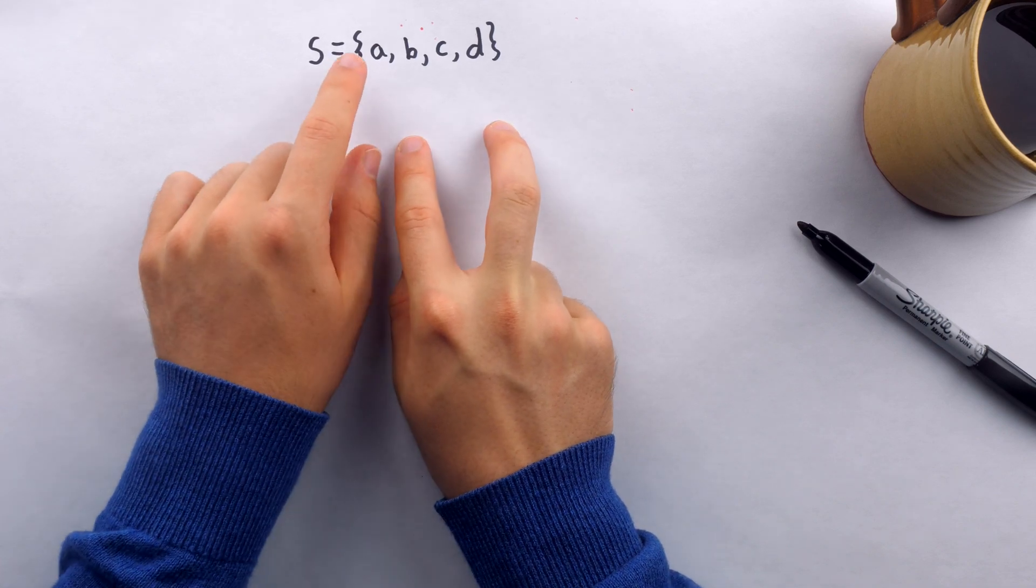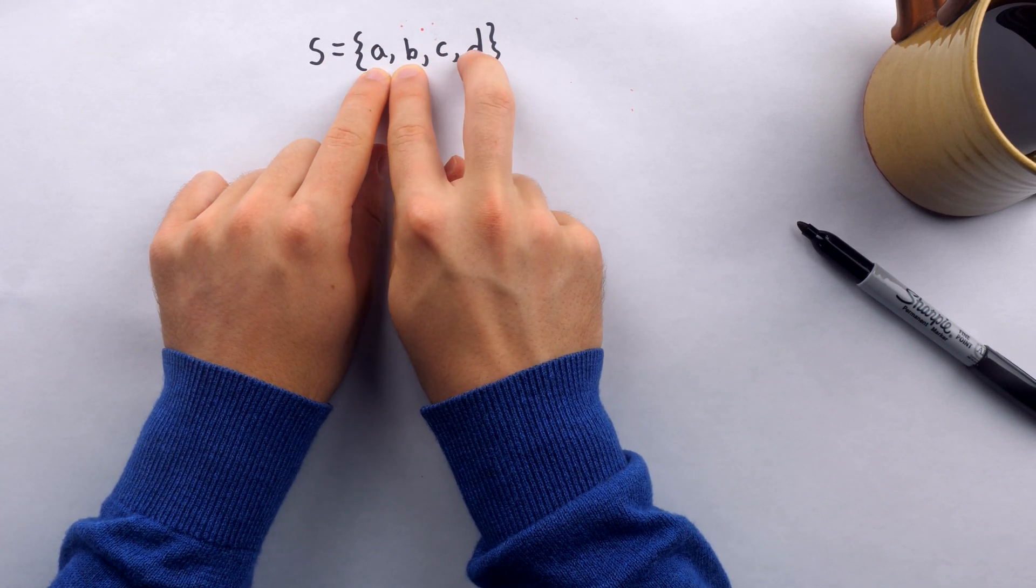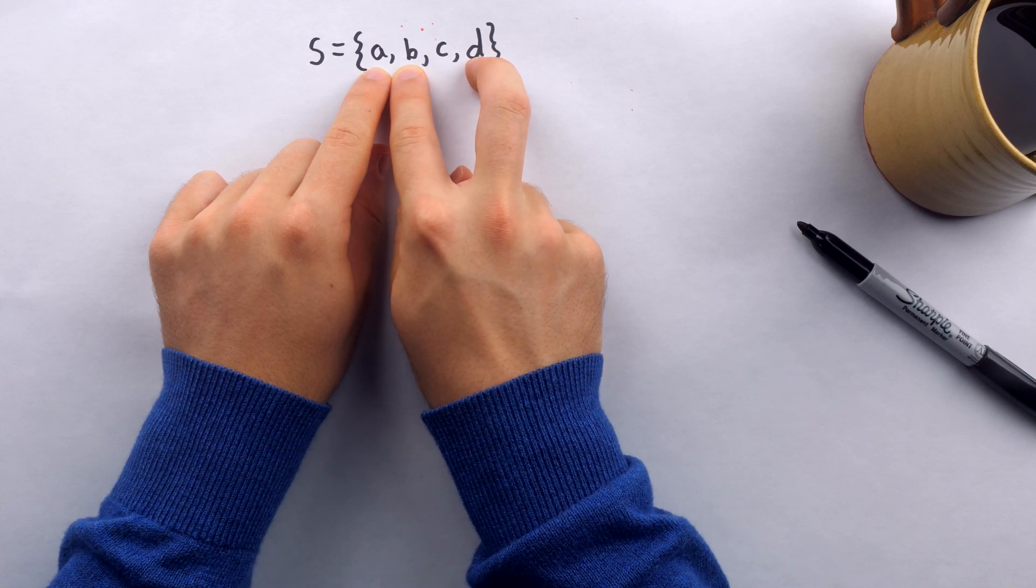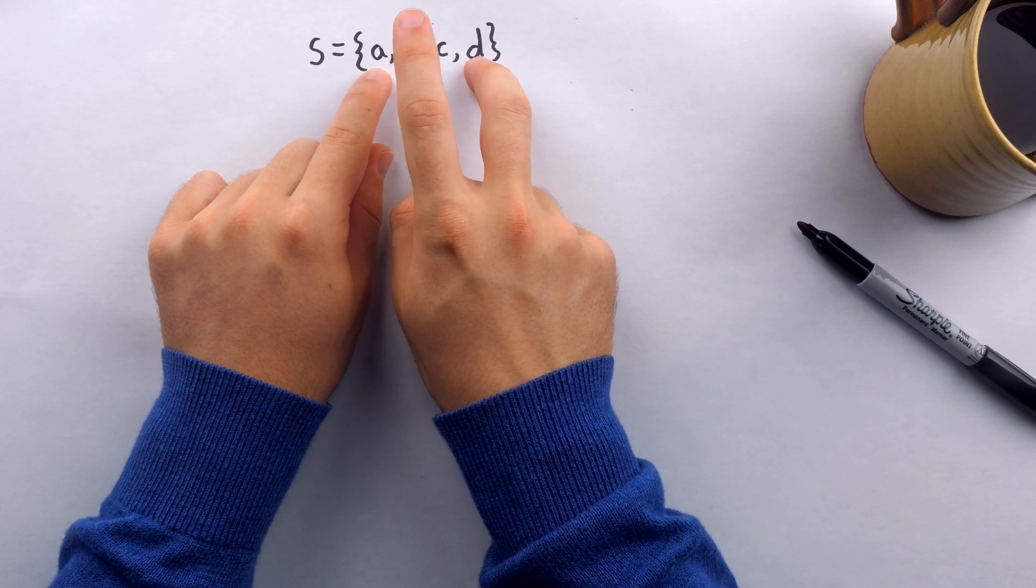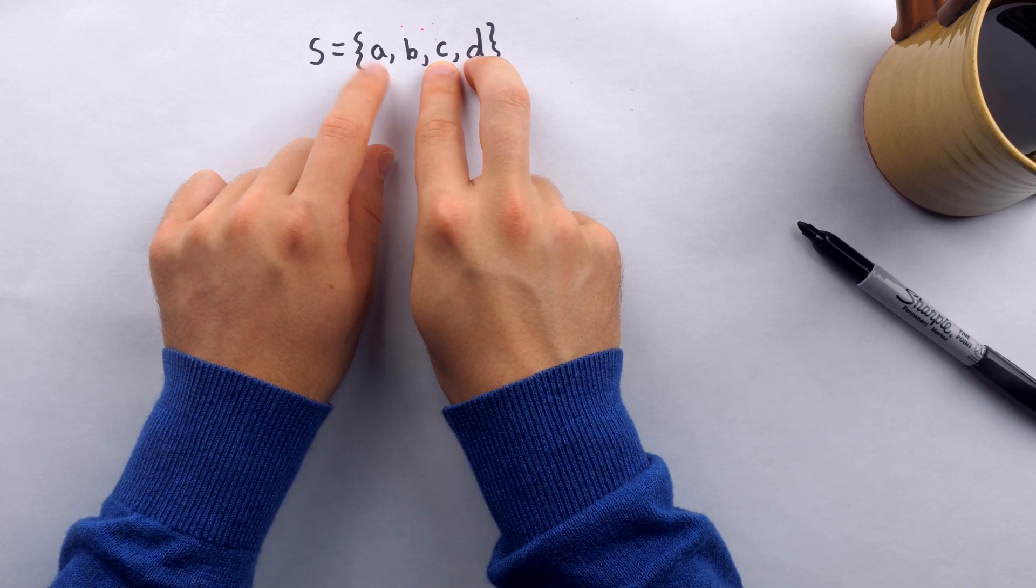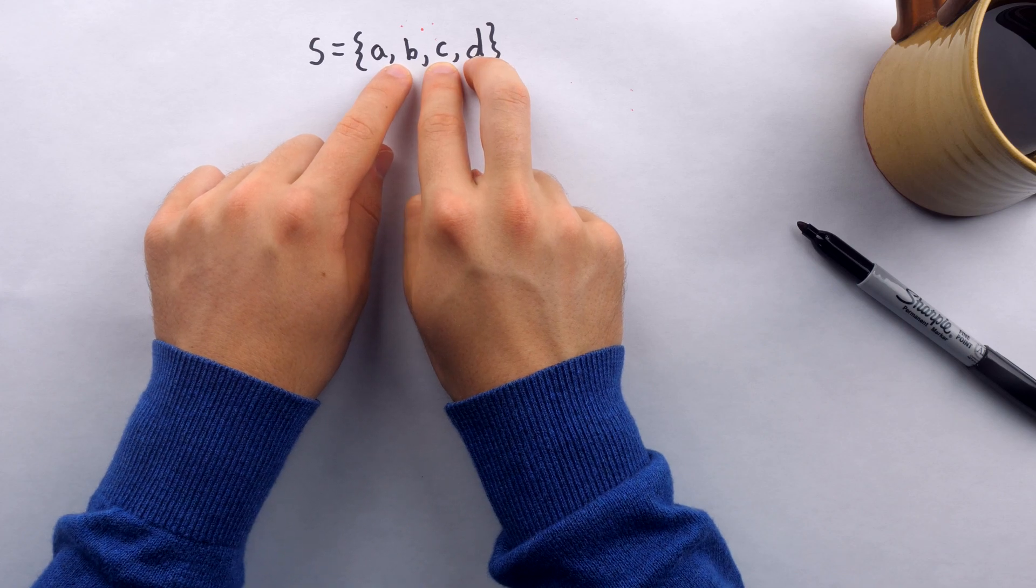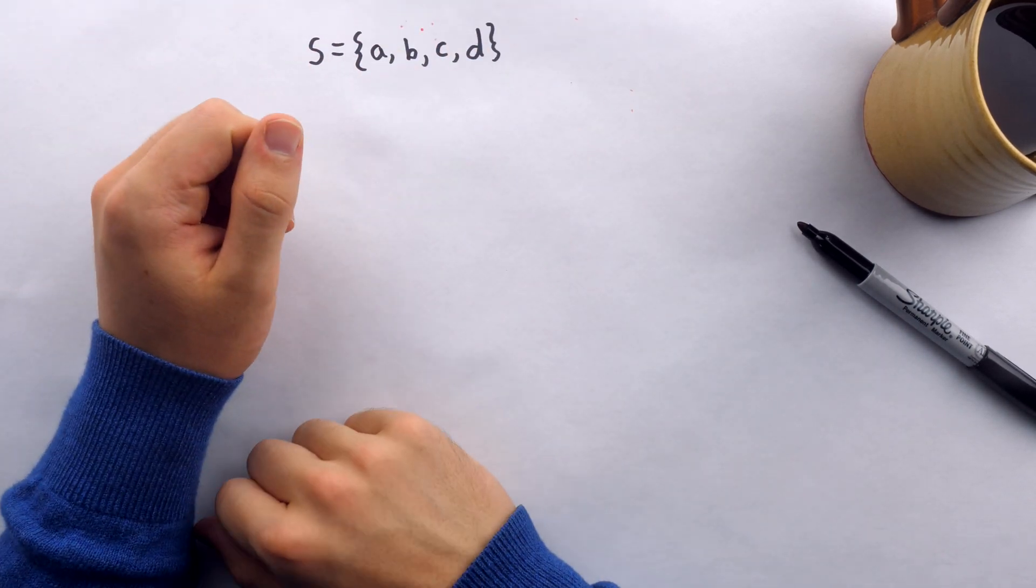So if we look at that three element situation again, I start with A, B, C, and then my rightmost finger moves to the right one. And that's as far as it can go. So then this finger, which is next to it, goes right one. That's as far as it can go. So then this finger, which is next to that, goes right one. And that's as far as it can go. And so then we're done with the three element subsets.